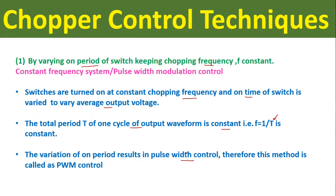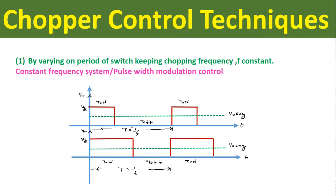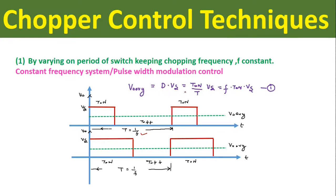The variation of the on period results in pulse width control — if we vary the on period of the switch, the pulse width also varies, therefore this method is also called pulse width modulation control. This waveform shows the pulse width modulation control or constant frequency system. In the constant frequency system we always keep the time period constant, so we can vary either the on period or off period of the switch, but the total time period T must remain constant to keep the frequency constant.